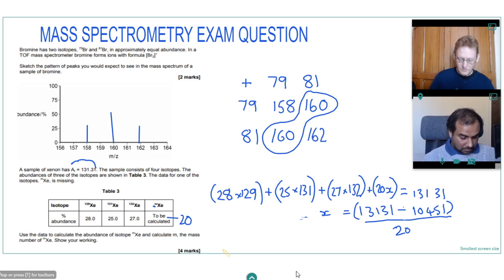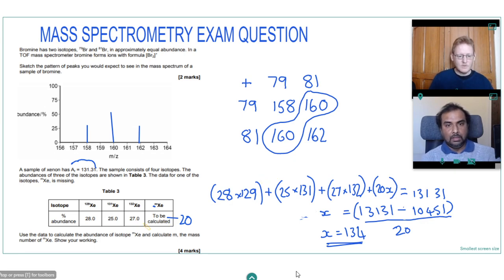So 13,131 take 10,451, then divided by 20. And we get 134. Which seems a reasonable answer given the other isotope masses there. So we've calculated the abundance of the isotope to be 20 and the mass number of the missing isotope to be 134.